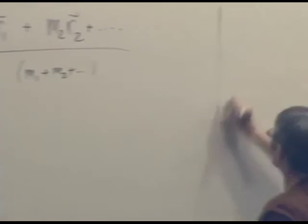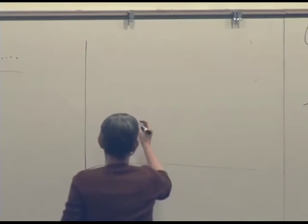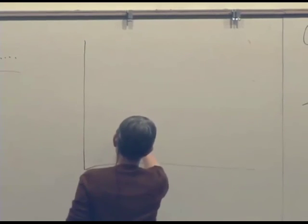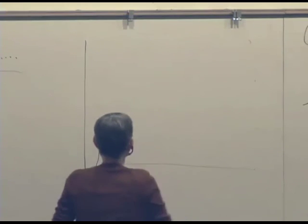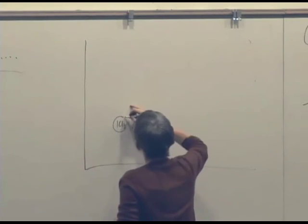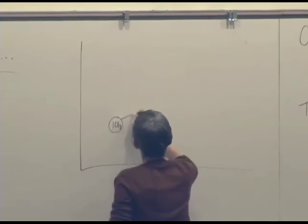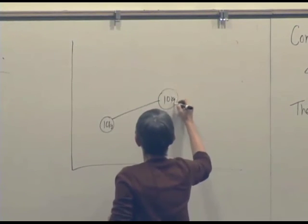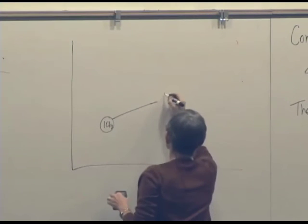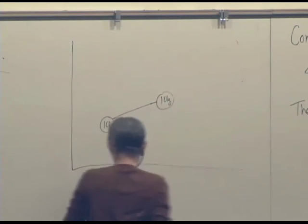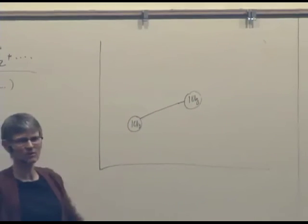Suppose we have a coordinate system with an origin and an object whose mass is ten kilograms. It's a twenty kilogram dumbbell — each end is ten kilograms, and the mass of the bar connecting the balls is very small.